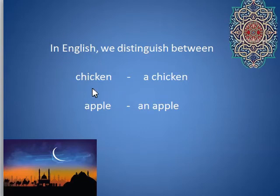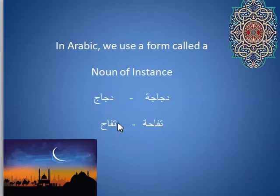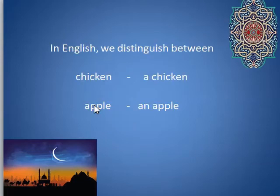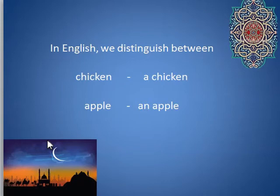The same thing happens in Arabic, and as always, it's easier and more consistent in Arabic. For these types of nouns, you're familiar with words like 'dijaj' — everybody knows dijaj, it's one of the first foods you learn. 'Ana uheb dijaj.' 'Tufa' is apple. Notice the difference: apple vs. an apple, chicken vs. a chicken. In Arabic, the difference is when we put a taa marbuta on the end — this is called the noun of instance, which is the opposite of the collective noun. 'Dijaj' is the collective — generic chicken — and 'dijaja' is one instance of a chicken.